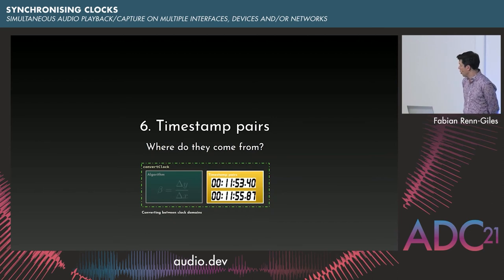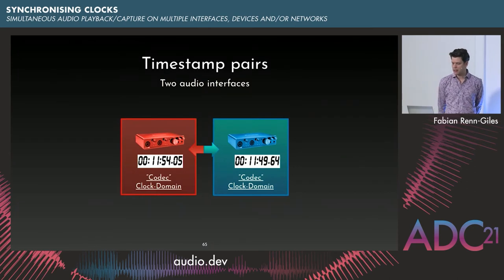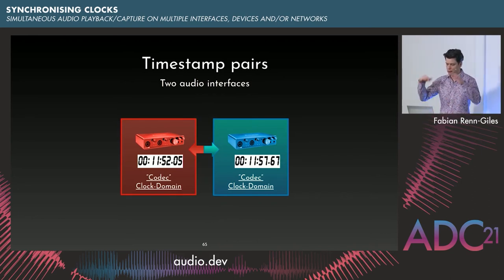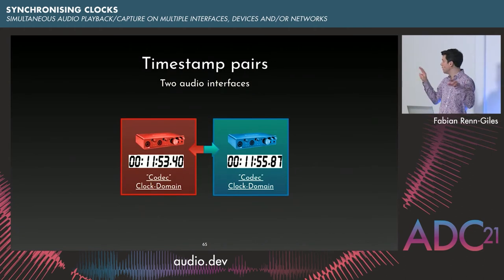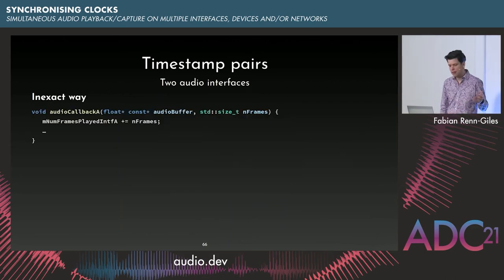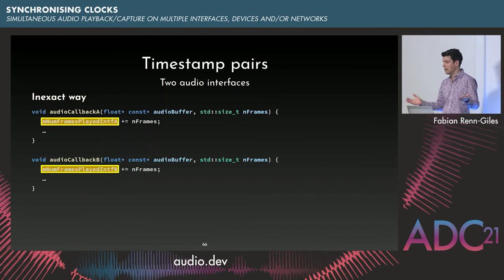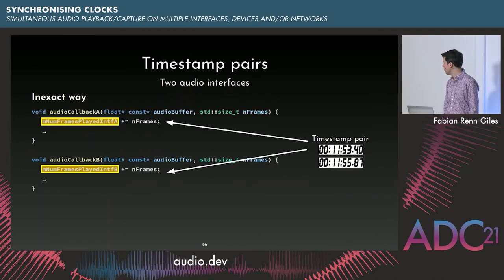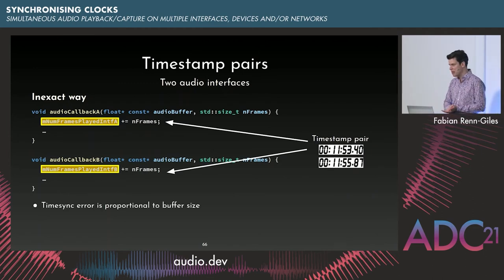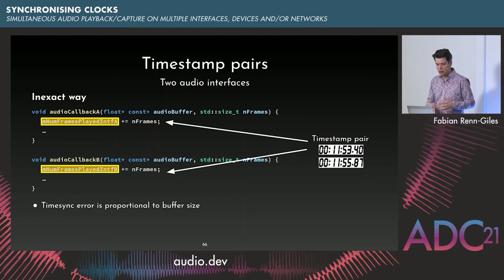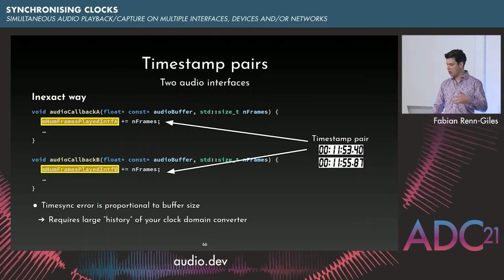Now: where do these simultaneous timestamp pairs actually come from? We have two audio interfaces with free-running clocks at different rates, and we want to capture both clocks at exactly the same point in time — the more simultaneously we can do that, the more accurate our synchronization will be. One way: in each device's audio callback, just count the number of elapsed samples — that's a clock, giving us a timestamp pair. The resolution is linked to the buffer size, so time sync error is proportional to the audio buffer size. On a Raspberry Pi this gives sync accuracy of around 20–30 milliseconds.